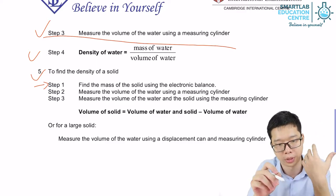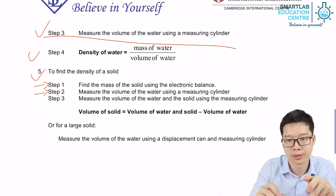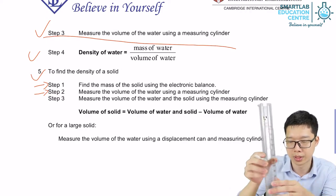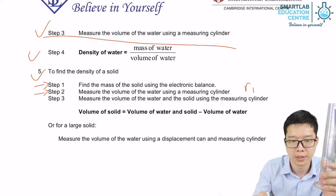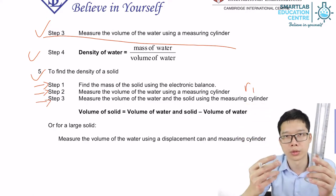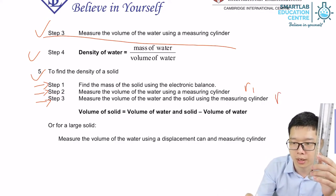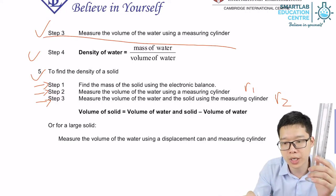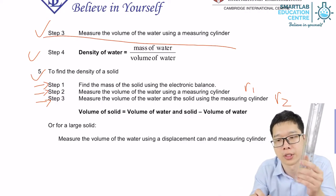Or if it's irregular shape, we can measure a certain amount of water using the measuring cylinder to get the reading one. And we submerge the whole stone or whatever solid object. And then we get reading R2.